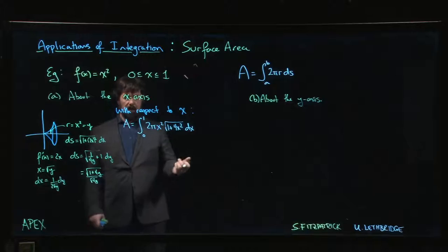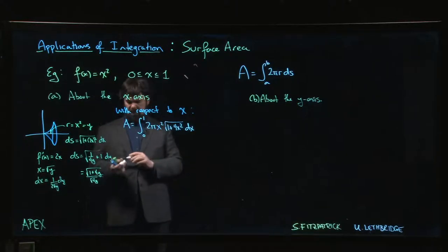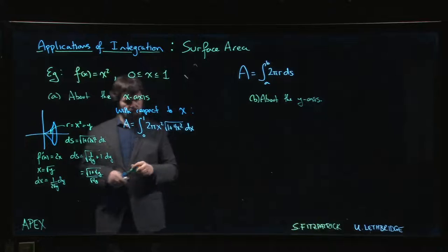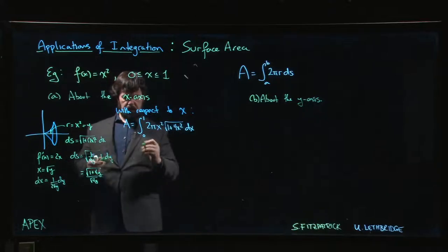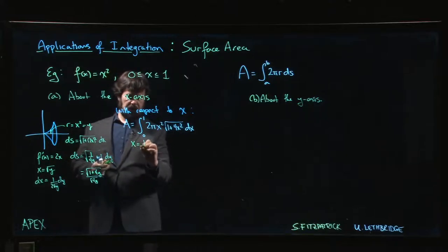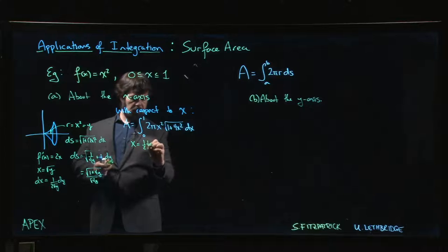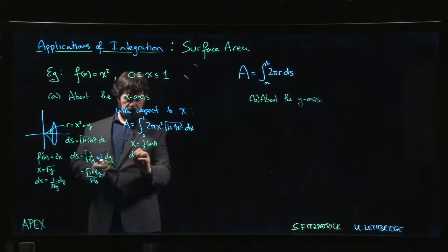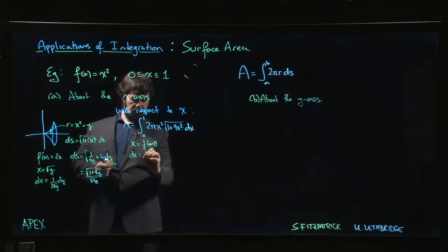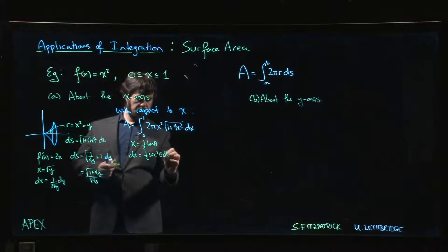dx, and then we proceed to evaluate the integral. Again there's two choices. We can either do x is one half tan θ, dx would be one half secant squared θ dθ.